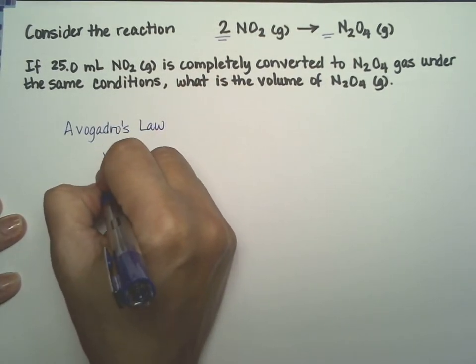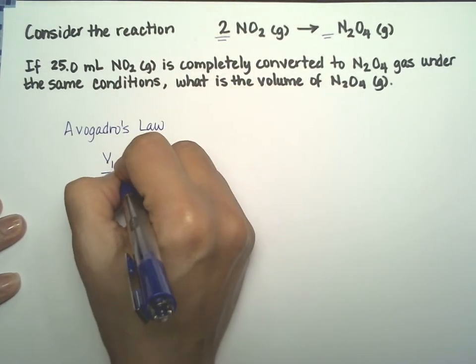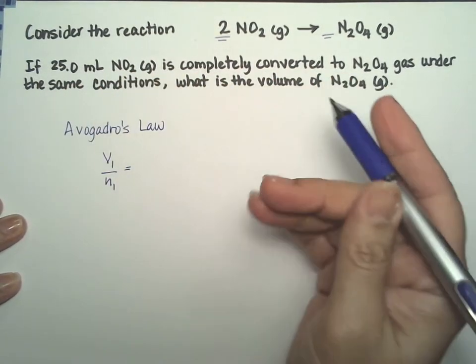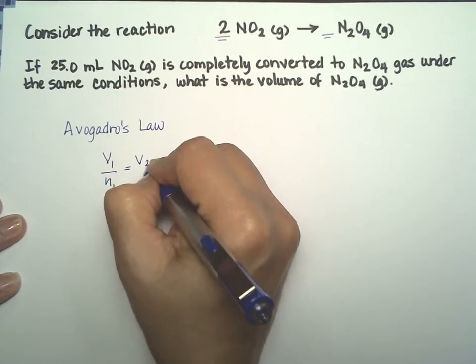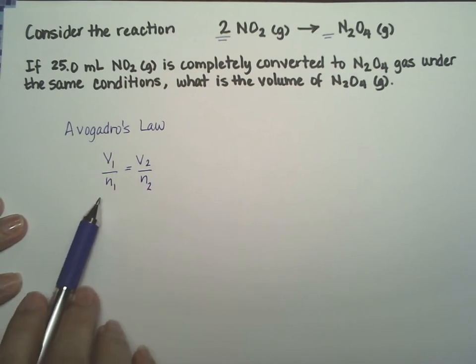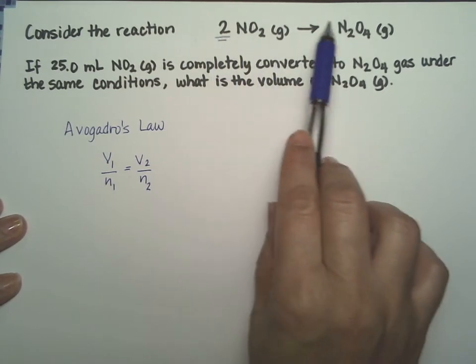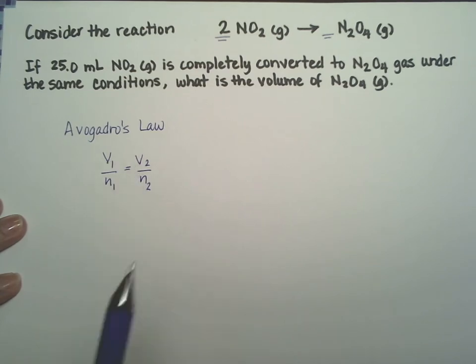So here, V1 over N1 is going to give a constant, so we can actually just equate it to the final conditions. So V1 over N1 equals V2 over N2, where N is the number of moles, and V is the volume.